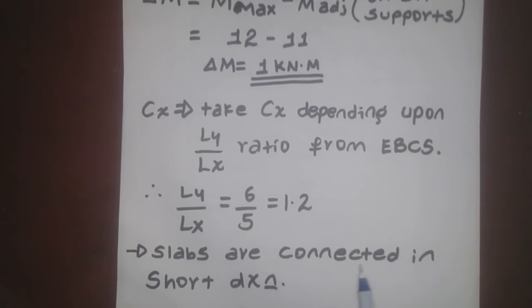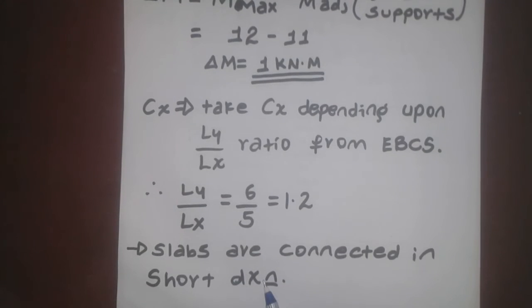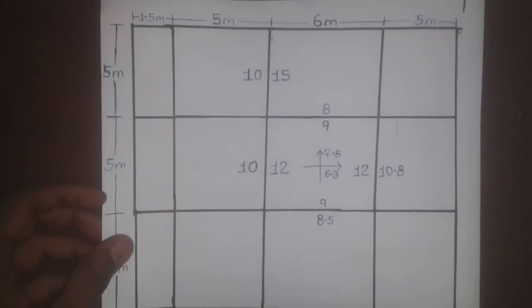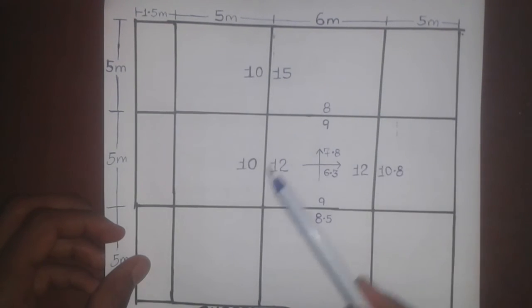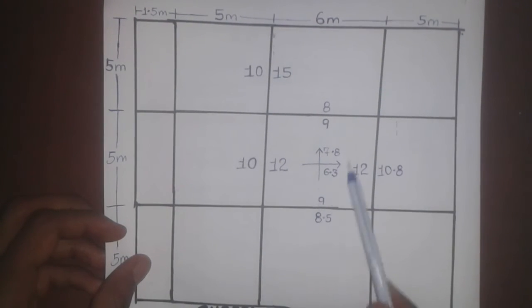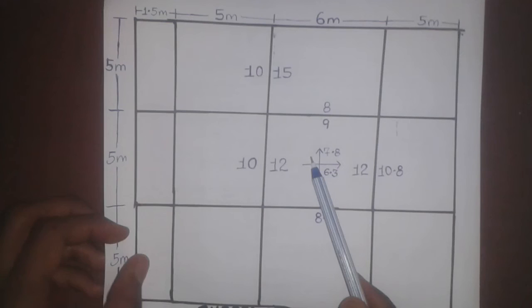The slabs are connected in the short direction. The same direction is connected. The span moment has to maintain the length of the span.